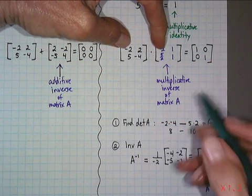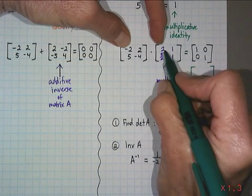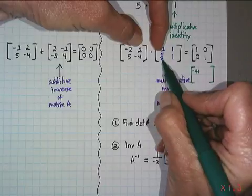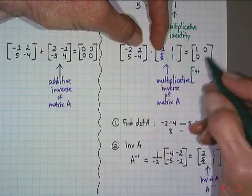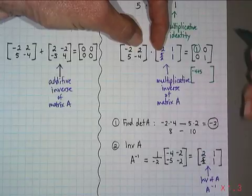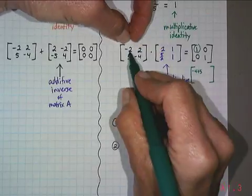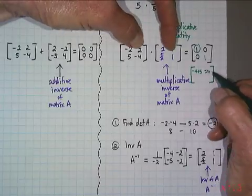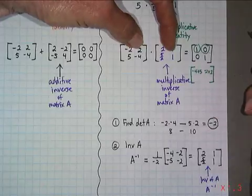If I multiply negative 2 times 2, that's negative 4, and I add to it 2 times 5 halves, which is 5. What's negative 4 plus 5? There's my 1. To get the first row, second column, I multiply negative 2 times positive 1, that's negative 2, then add it to 2 times 1, which is 2. What's negative 2 plus 2? That's zero.